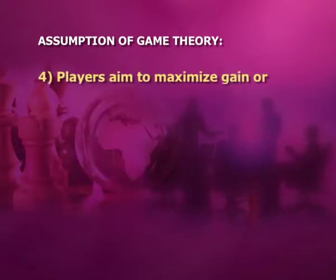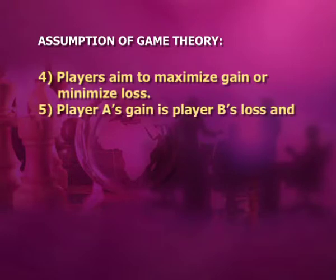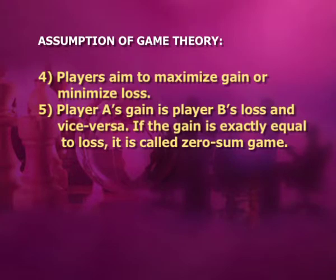Fourth, players aim to maximize gain or minimize loss. Fifth, player A's gain is player B's loss and vice versa. If the gain is exactly equal to the loss, it is called a zero sum game.